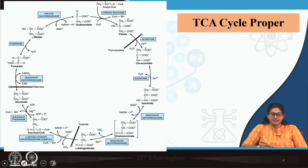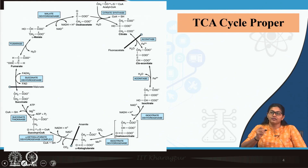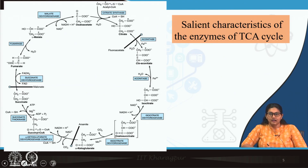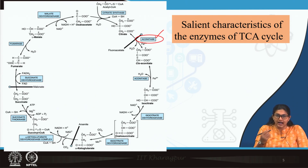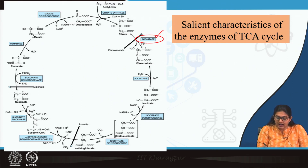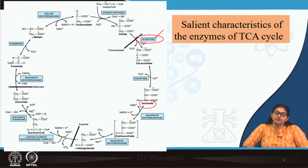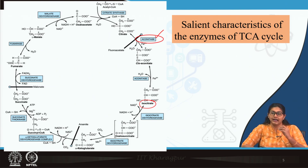Looking at the TCA cycle diagram from the previous class, there are a few important enzymes whose features we will now discuss. Number one is Aconitase. Aconitase catalyzes isomerization, converting citrate to isocitrate. Aconitase has one important iron-sulfur center which acts as a prosthetic group within this enzyme molecule.